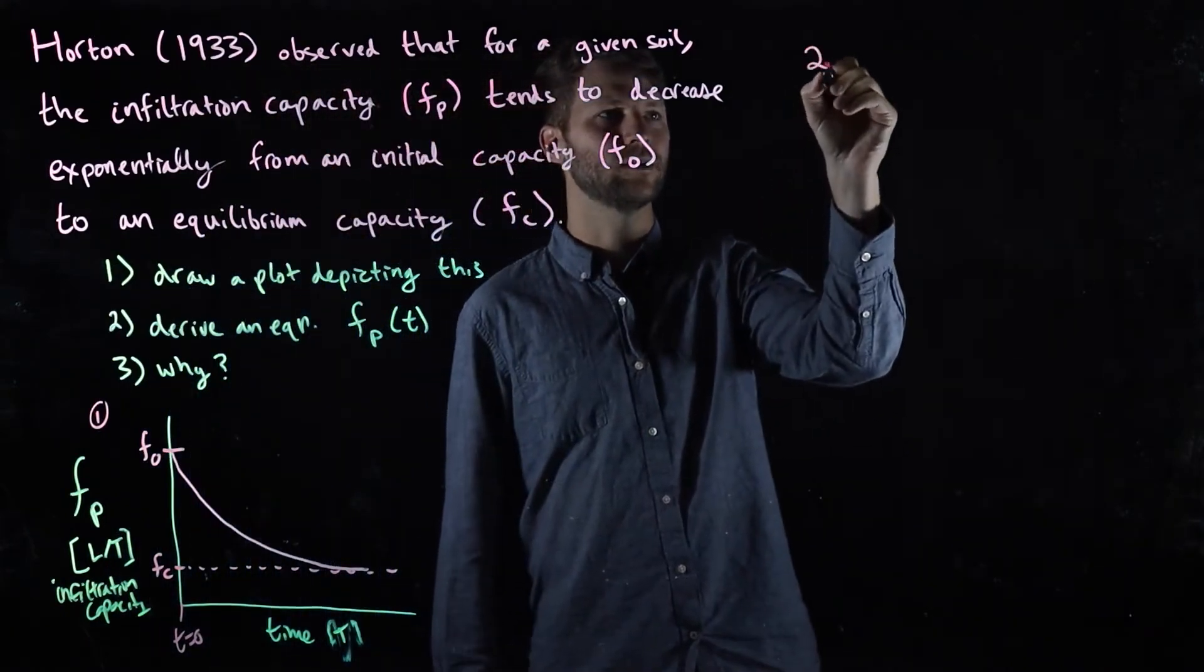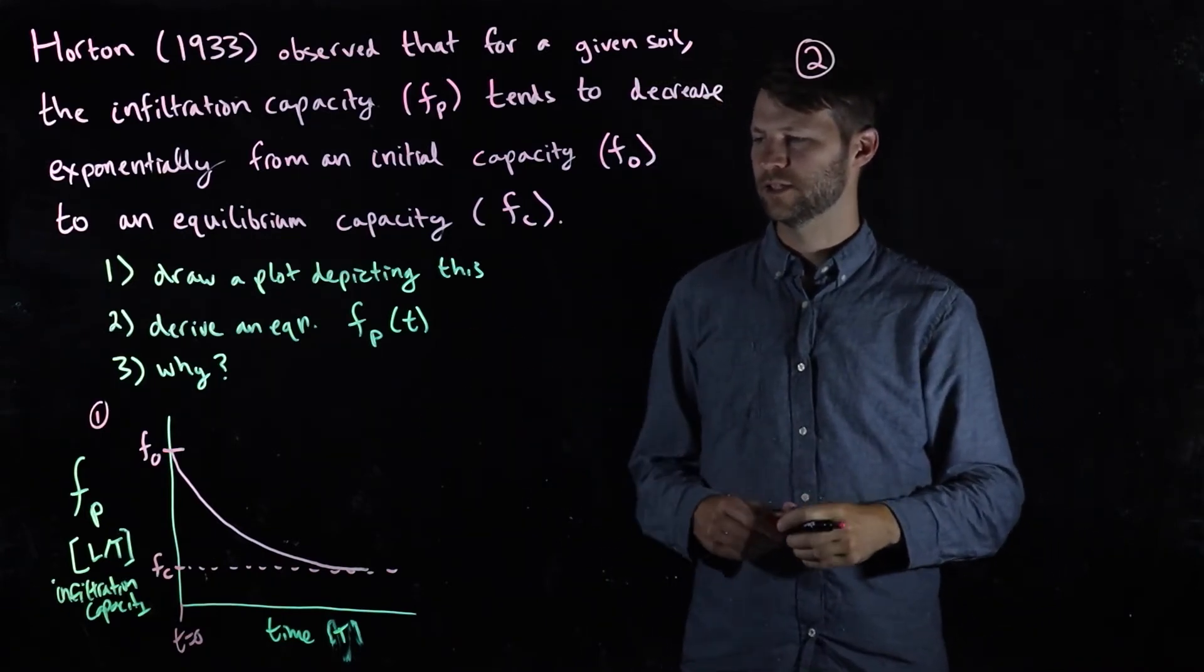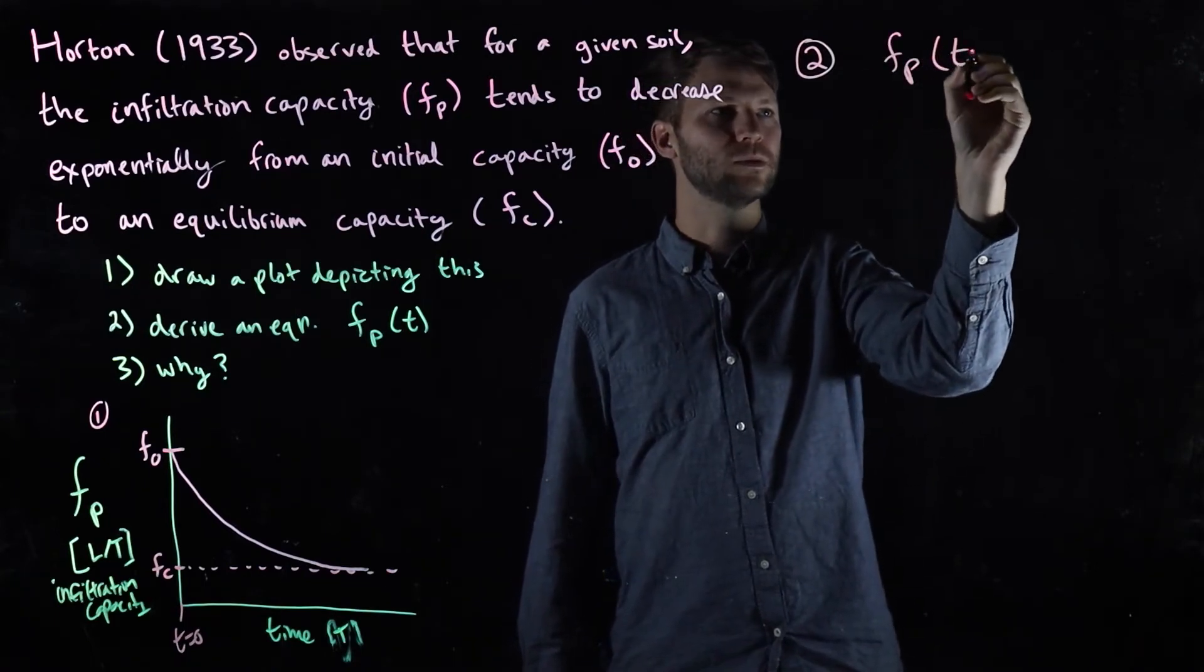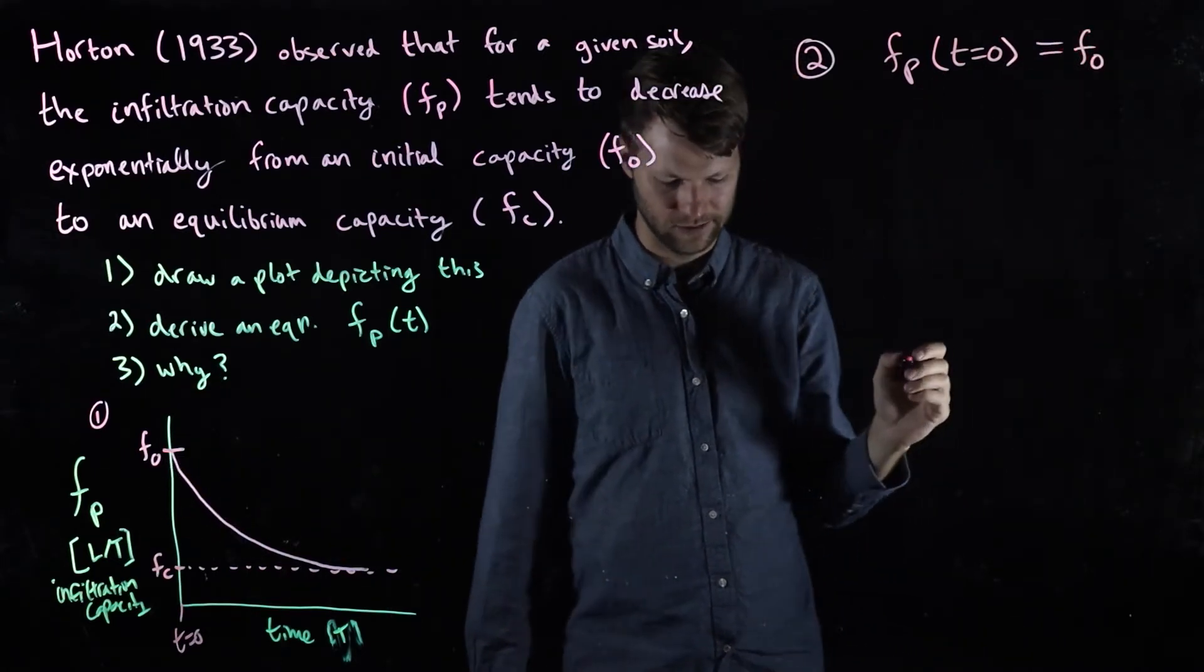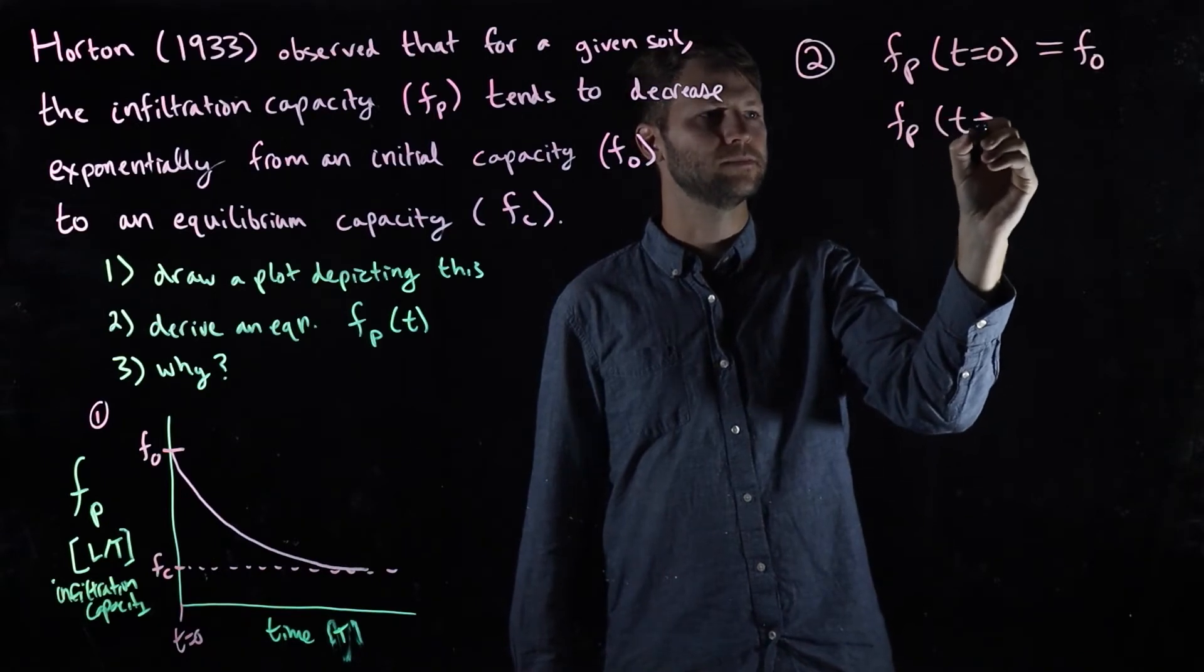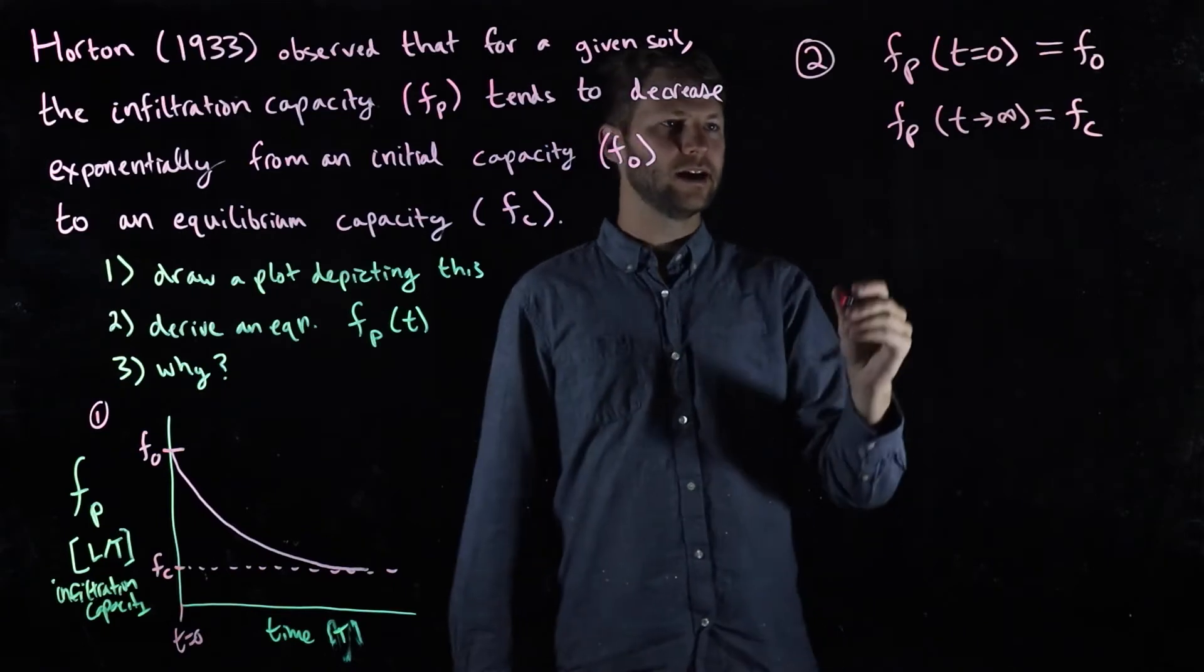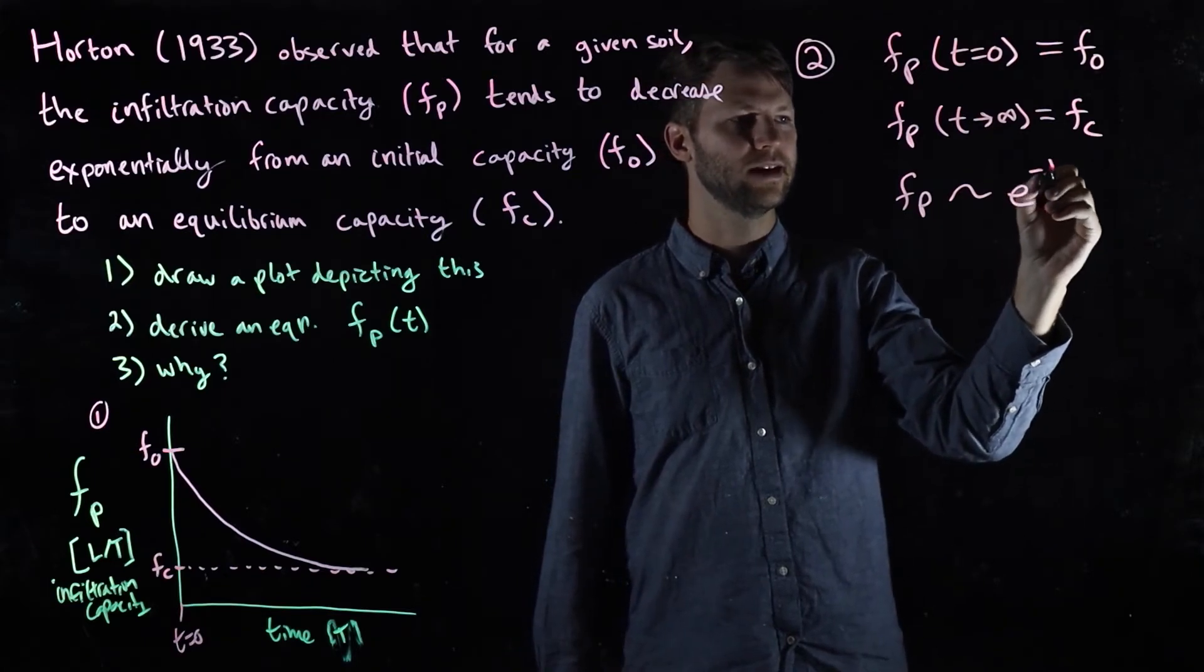Part two, derive an equation. Let's review some things we know about exponential functions and talk about how this graph should behave in the limit. I know that at time equals zero, this function f_p had better equal f_0. I know that in the limit as time goes to infinity, it had better reach the equilibrium capacity f_c. I also know that this function in general should scale like a negative exponential, e^(-kt).